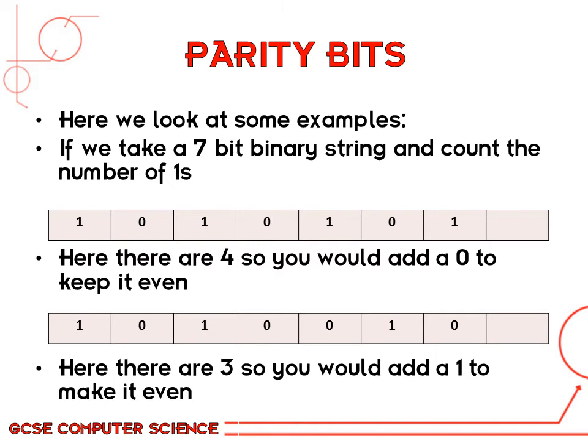If you take a look at these examples on this slide, the first string is seven bits. Count the number of ones: one, two, three, four — there are four ones in this string of seven bits, so to keep it even we'd add a zero at the end. The second string also has seven bits. Count the ones: one, two, three — there are three ones, so we'd need to add a one to make the number of ones even.